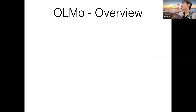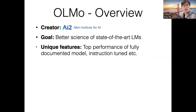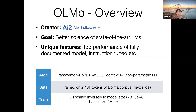Then let's talk about OLMo. OLMo is an open-source model trained by AI2, and the goal is to have a better, more transparent model for the research community.